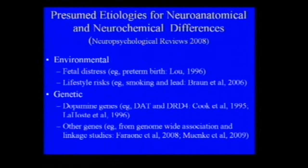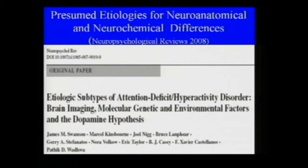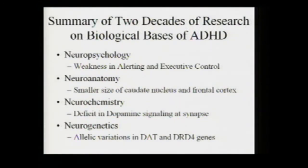I'll now turn this over to Max and Bruce to talk about new discoveries in genetics and environmental exposures associated with ADHD. To summarize: two decades of work in neuropsychology have documented weaknesses in alerting and executive control; neuroanatomy shows smaller sizes in a few brain regions; neurochemistry shows deficits in dopamine and probably other neurotransmitter systems; and neurogenetics has evaluated those key genes.